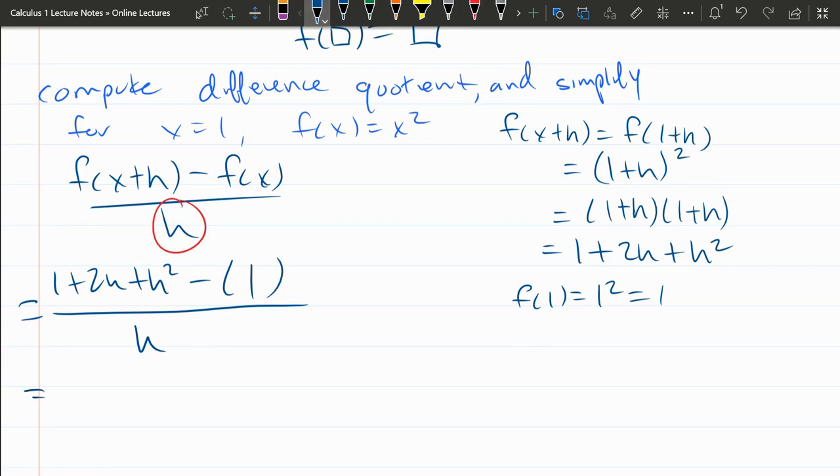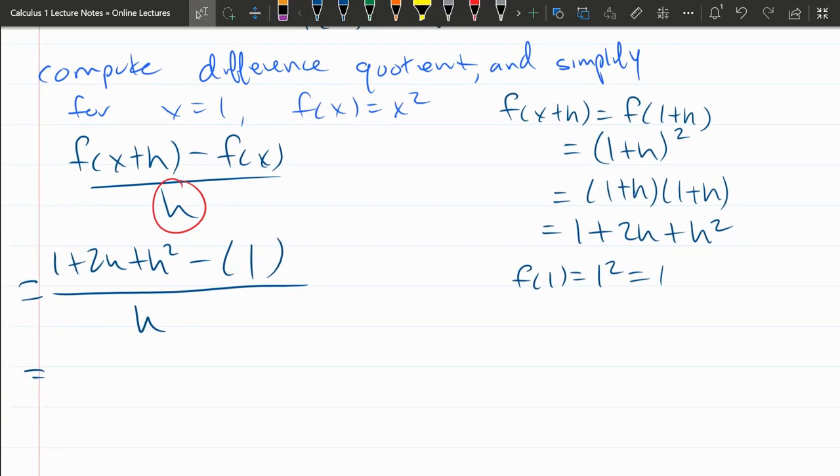We're going to see if we can get rid of it. Now I do have a 1 minus a 1, so those 1's cancel. So I have 2h plus h squared. I could write 2h plus h² divided by h.